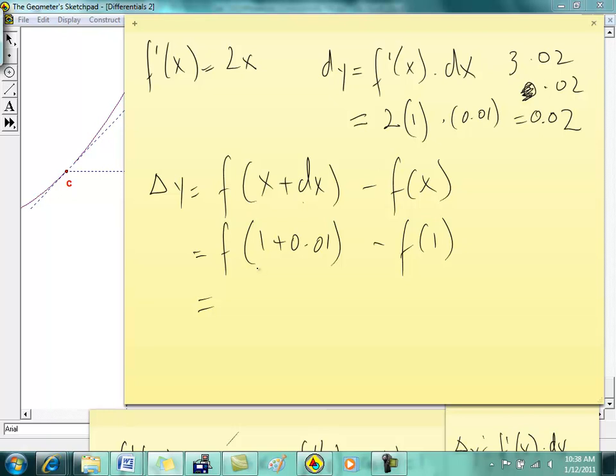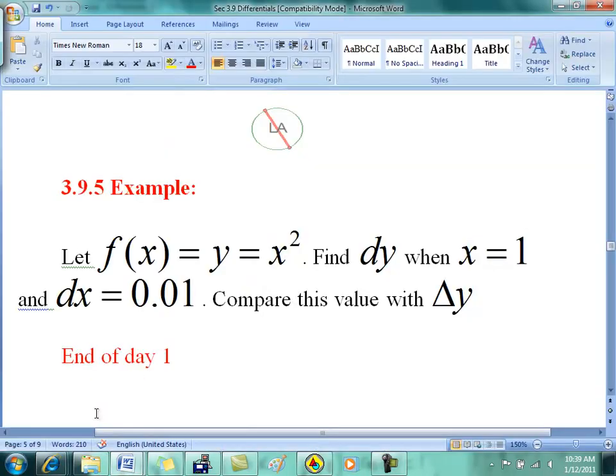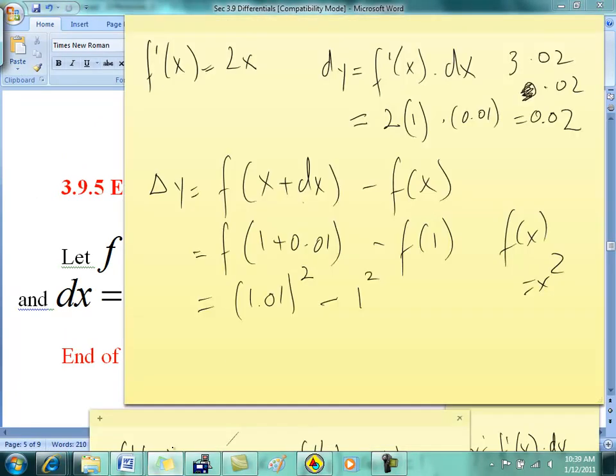So f of 1 plus 0.01, that's going to be 1.01 squared. Everybody with me on that? Minus 1 squared? Well, isn't f of x equal to x squared? Isn't that what it is? Right? So can someone get a calculator out and do this for me?